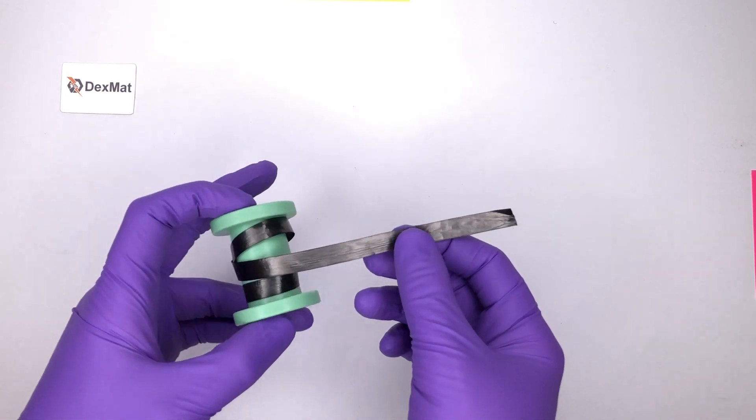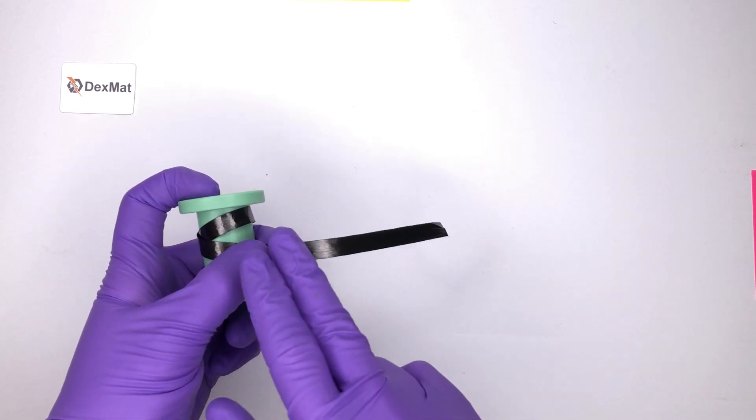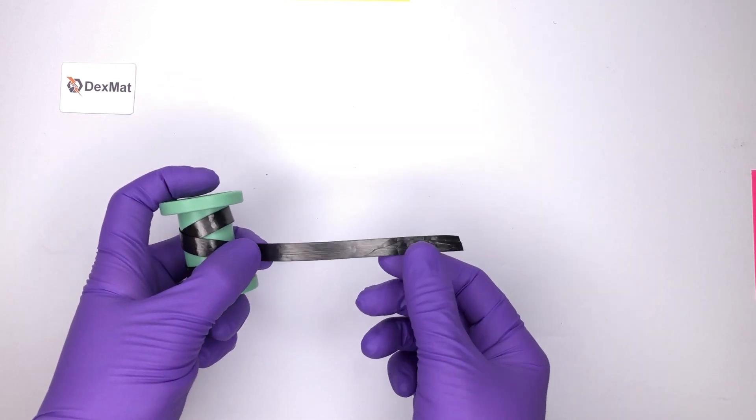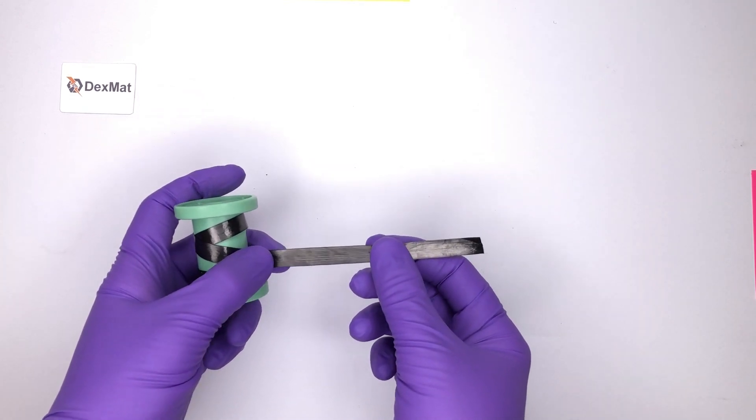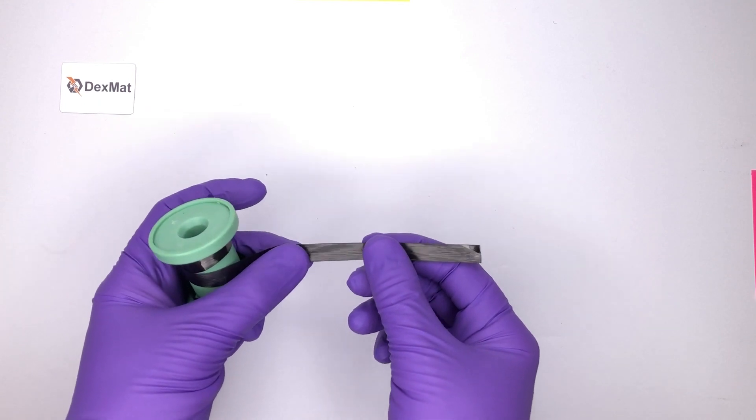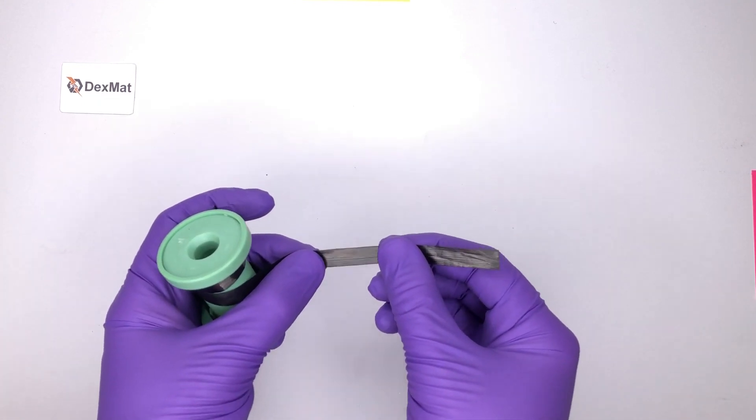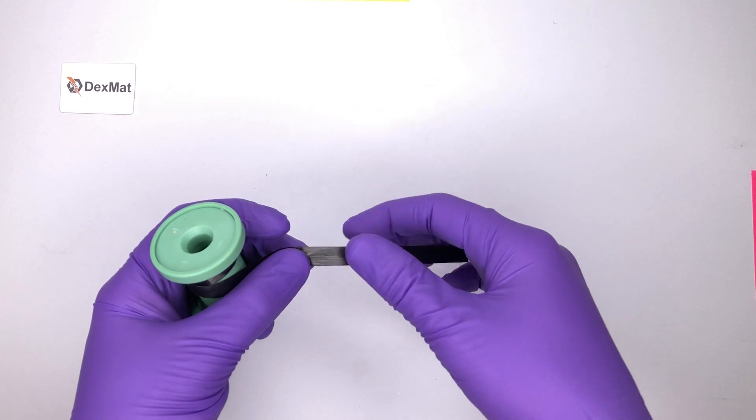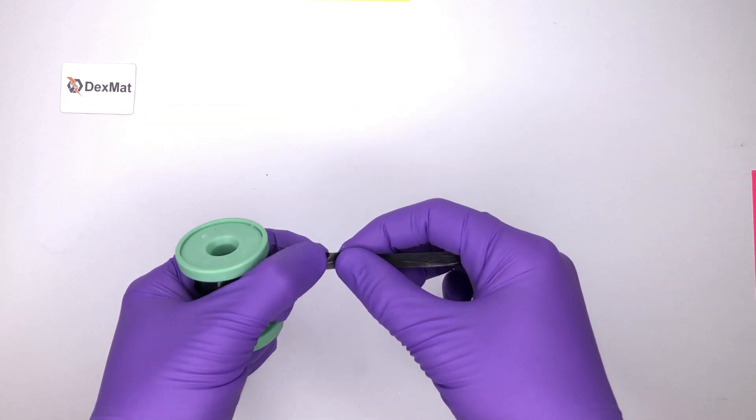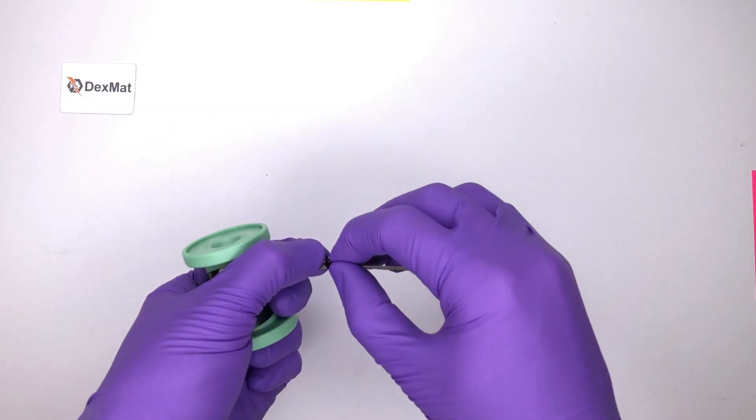The carbon nanotubes in this film are very highly aligned along the direction of the film itself, which gives it very good electrical conductivity and also good mechanical strength. It's very tough in tension in this direction and also very difficult to tear across the alignment direction of the tape.